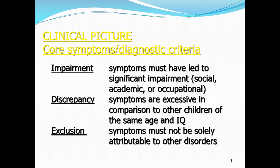Symptoms must have led to a significant impairment — whether socially, academically, or occupationally — to ensure we're giving a diagnosis for a good reason. The symptoms also need to be excessive: if you compared a child with possible ADHD to a child definitely without ADHD of approximately the same age and IQ, their symptoms should stand out. Sometimes during an assessment we do a school observation, which gives a really good opportunity to compare that child to their classmates.